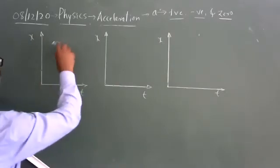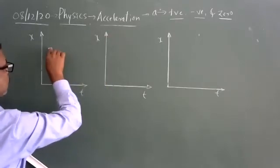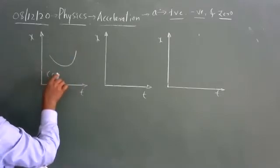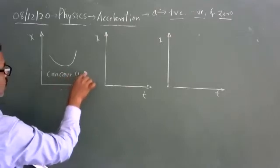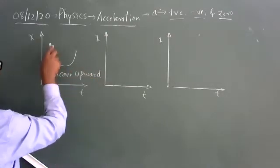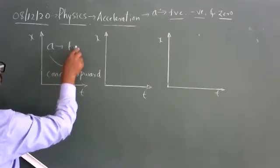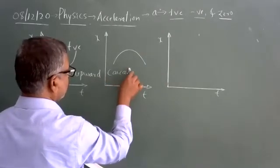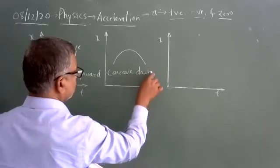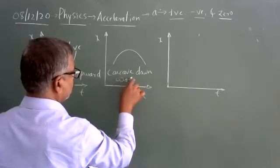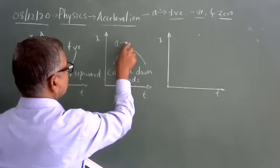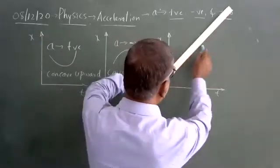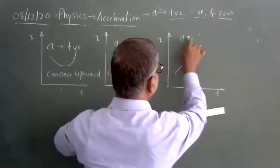All these graphs are X-t graphs. Acceleration is positive — it is concave upward. Such graphs are called concave upward, so you can say acceleration positive. Concave downwards — acceleration negative. You have a linear slope where acceleration equals zero.